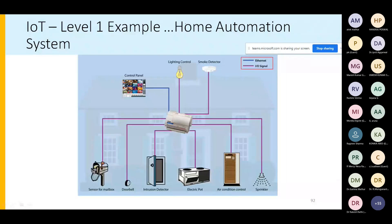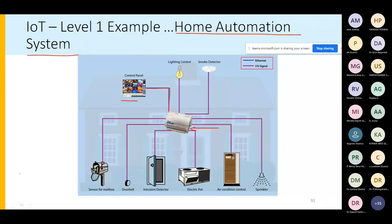A home automation example of Level 1 includes sensors for a mailbox, doorbell, intrusion detection, electric pot, air conditioning, and sprinkler — all communicating to an access point connected to a control panel. However, there is no direct communication between sensors; for instance, the sprinkler cannot know if the water tank level is low.